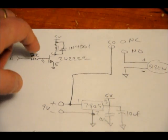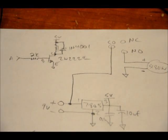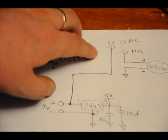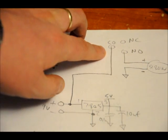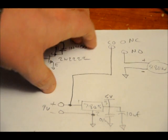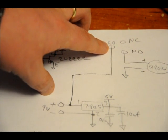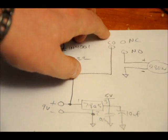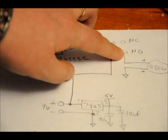By default, when the relay is off, the common pin is connected to the normally closed pin. And when the relay is activated, the common pin switches from the normally closed pin to the normally open pin.